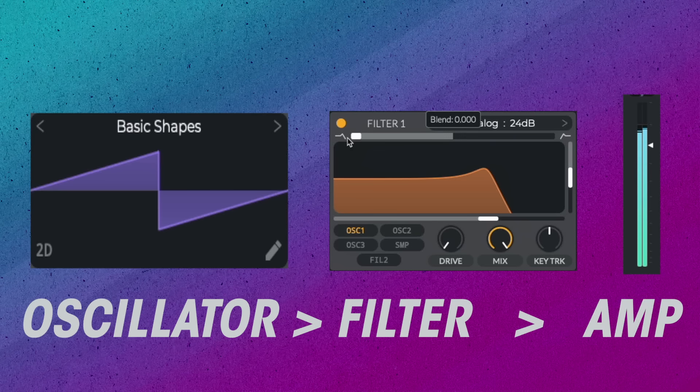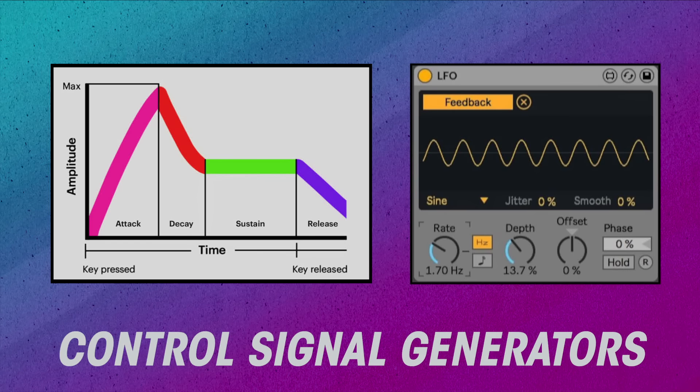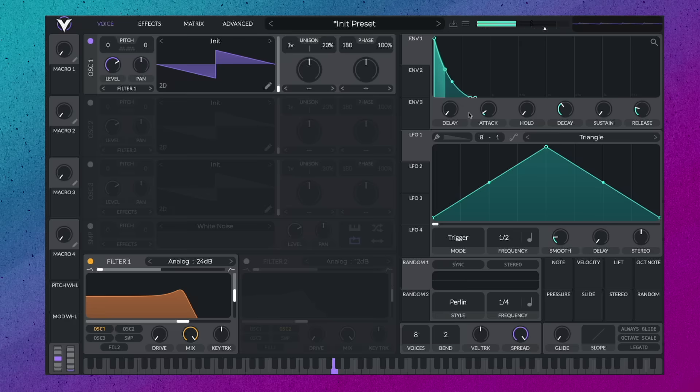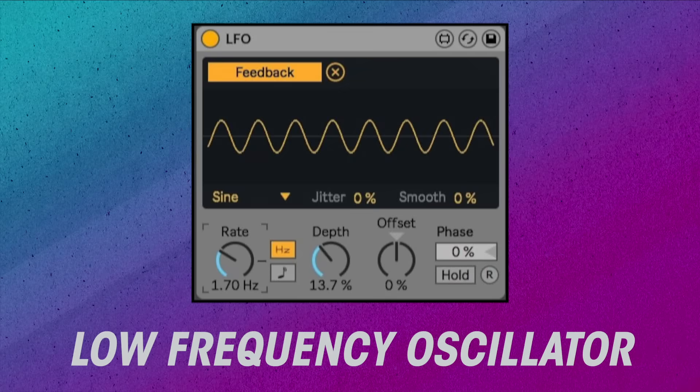Our signal path is: oscillator going into a filter going into an amplifier. From there we can automate parameters of the sound using control signal generators. We could use an envelope generator to modulate the overall intensity of the signal by connecting it to the amplifier. We could also connect a low frequency oscillator to a filter for a fun wah-wah-wah kind of sound.